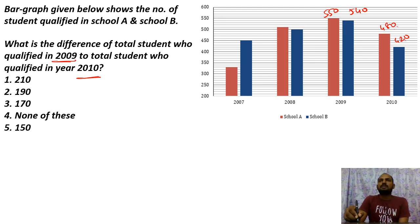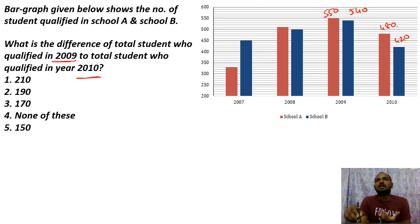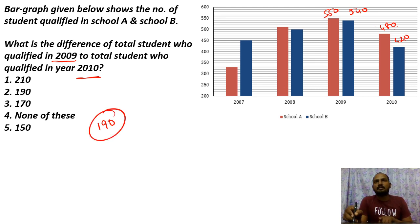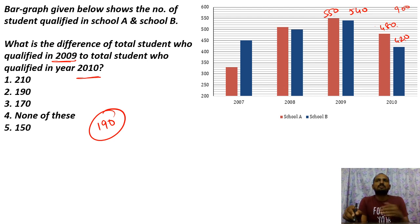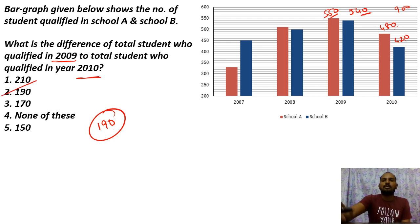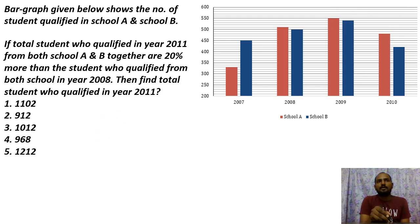So adding 2009 totals: 900 plus 500 gives 1000. Adding 2010 totals: 1000 minus some values. The adjustments are 100, 150, and 190. So the difference is 190, and the answer is option B.